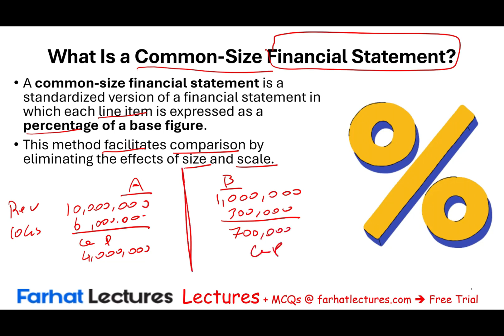At first you would say, which company is doing better? You would say Company A — they have $10 million in revenues. But when we look at the common size and turn everything into percentages: Cost of Goods Sold for Company A represents 60% of sales, so revenue is 100%, cost of sales is 60%, and gross profit is 40%. For Company B, Cost of Goods Sold is 30% and their gross profit is 70%.